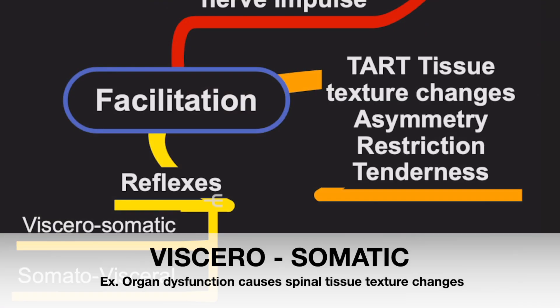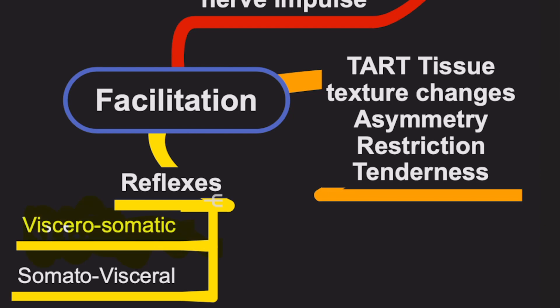The primary types of reflexes to know are viscerosomatic and somatovisceral. The biggest one to know is viscerosomatic — that is the biggest one they will test you on. When a visceral stimulus produces a somatic response, for example a gallbladder issue transmits sensory input from the gallbladder through visceral receptors to the spinal cord, causing T5 through T9 to be facilitated, producing an exaggerated response that impacts local muscle structures causing tension, asymmetry, or tissue changes near the spinal cord. There's also somatovisceral reflex — for example, the pectoralis muscle causing a reflex to the heart. That comes from muscle (somatic) to an organ (visceral), but don't spend too much time on that.